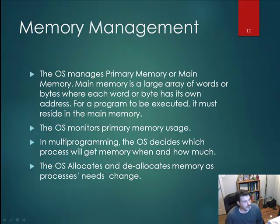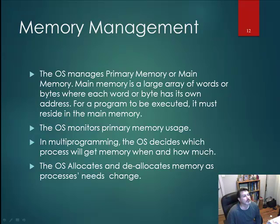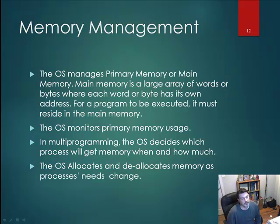The operating system manages primary memory or main memory — a large array of words or bytes where each has its own address. For a program being executed, it must reside in main memory. The OS monitors primary memory usage. In multiprogramming, the OS decides which process gets memory, how much, and when to add or subtract from it, and it allocates and deallocates memory as process needs change.